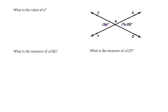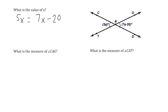What we should notice is these two expressions are wedged in these two angles right here. These two angles happen to be vertical angles, which we should know are congruent to each other — they have identical angle measures. So what we're going to do to figure out what x is, is take 5x and set it equal to 7x minus 20, because we know those two angles are equal.